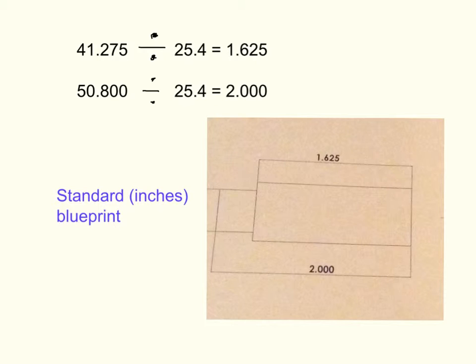So 41.275 divided by 25.4 equals 1.625 inches, and 50.800 divided by 25.4 equals 2.000 inches.